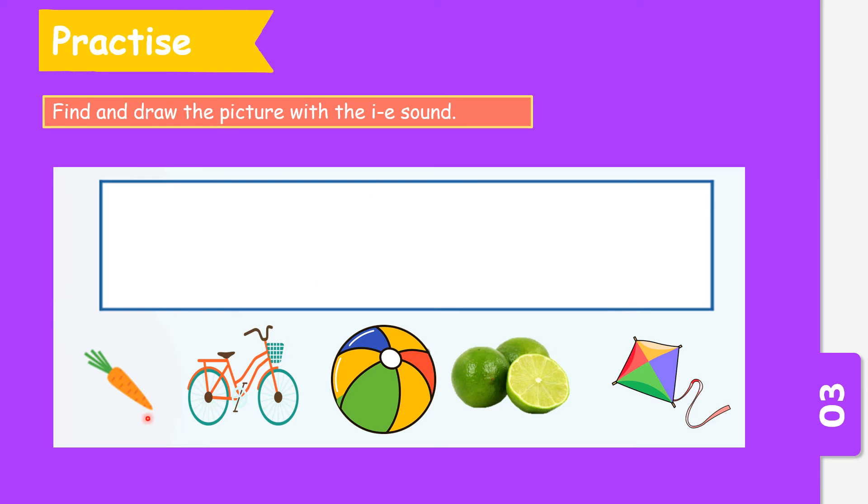We have carrot, bike, ball, lime and kite. So which one should you draw in the box given here?